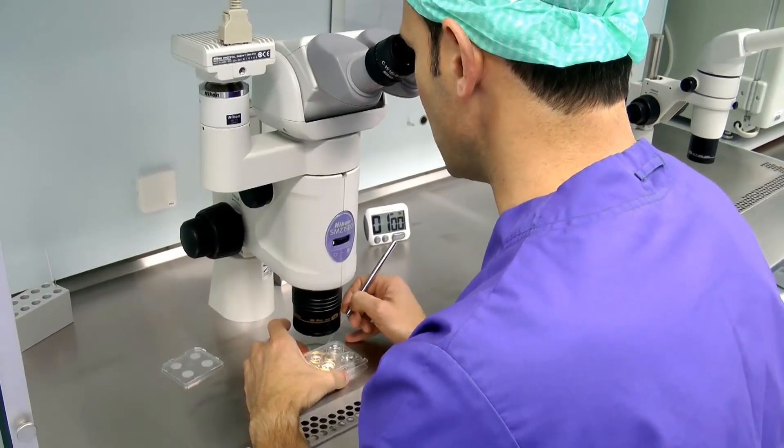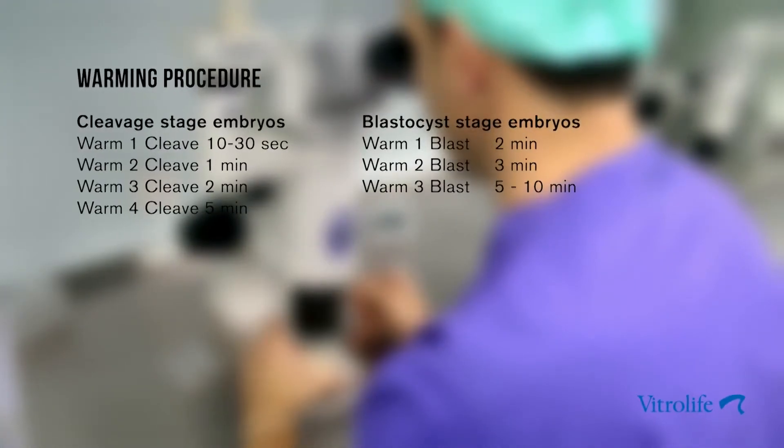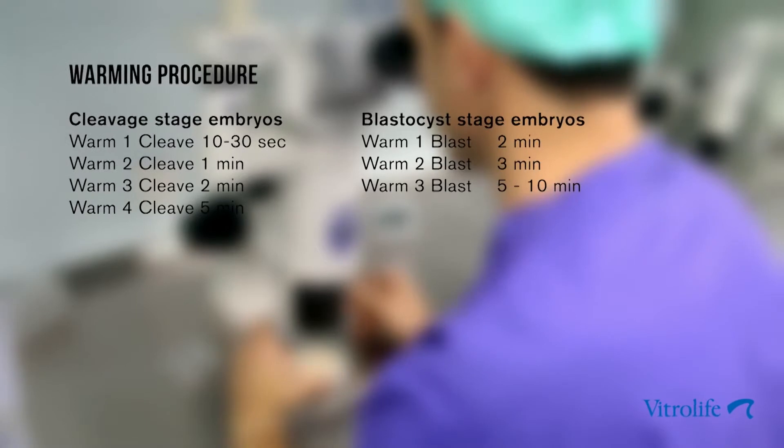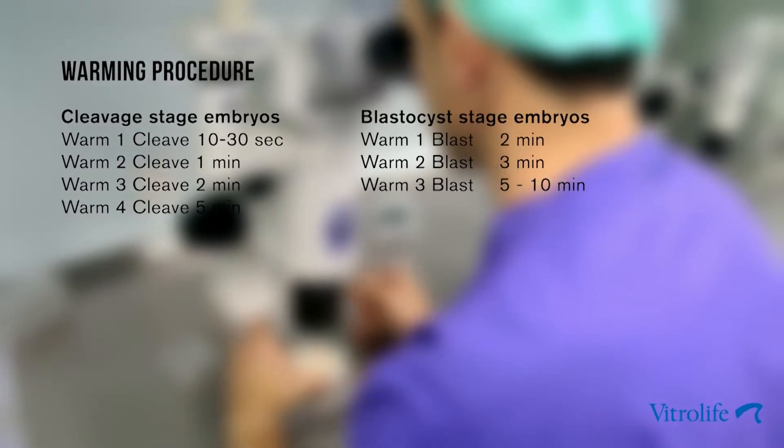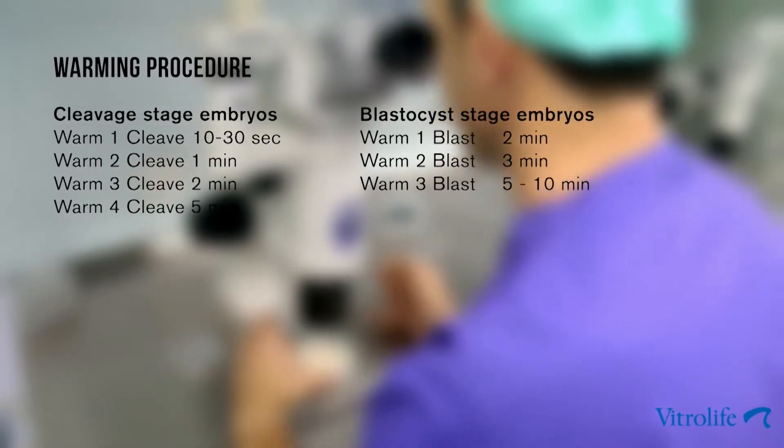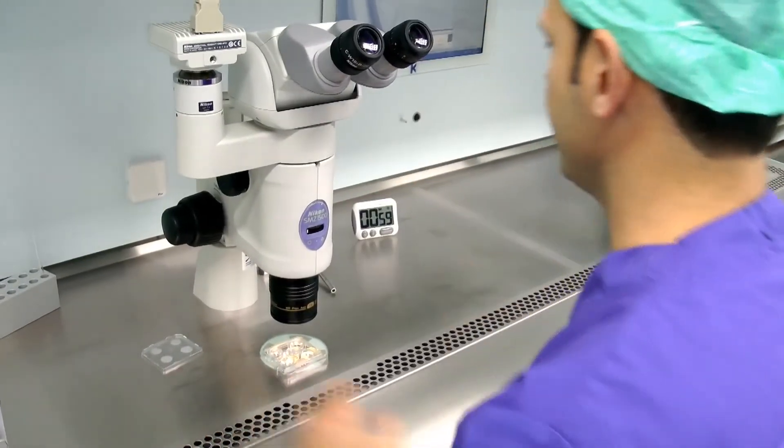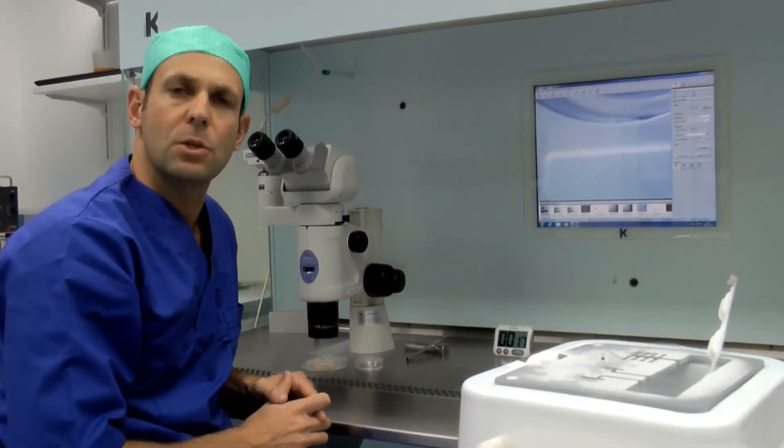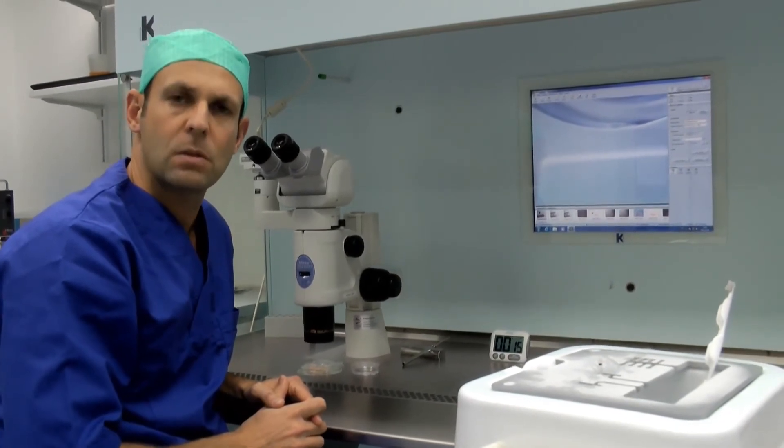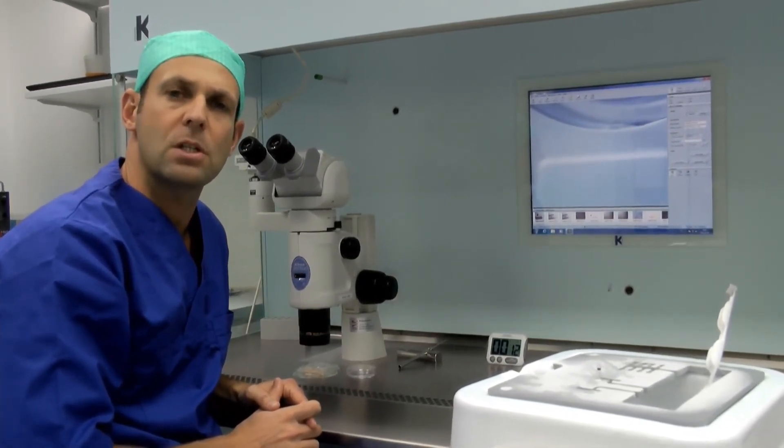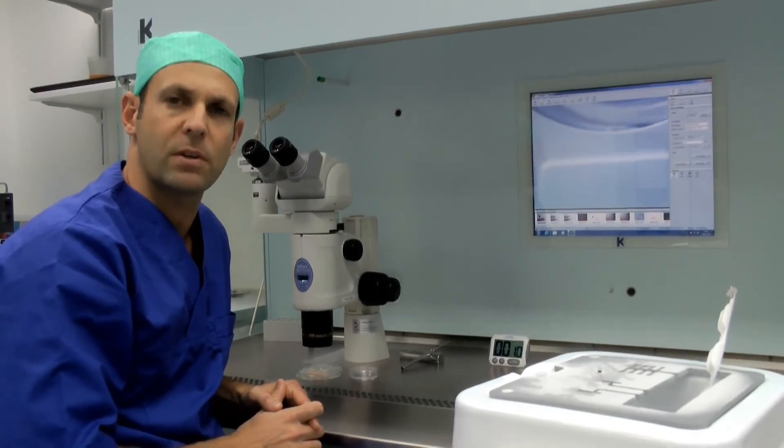Once you have located the embryo, move it through the different warming solutions according to the protocol for either cleavage stage embryos or blastocysts. Once the embryos have reached the last solution, move them into your culture dish, give them a good wash, and move them into the culture dish until the time of embryo transfer.